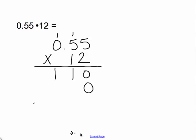Put your placeholder, 1 times 5, 5, 1 times 5, 5, 1 times 0, 0. Go ahead and add.